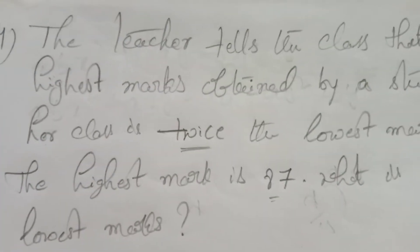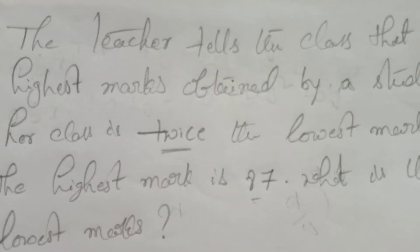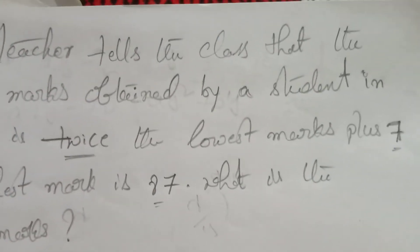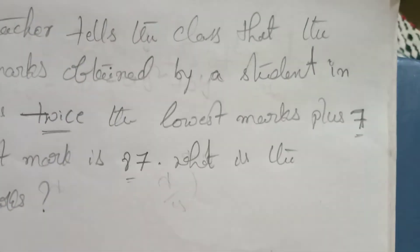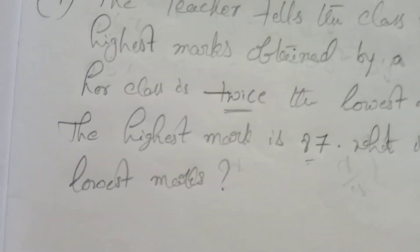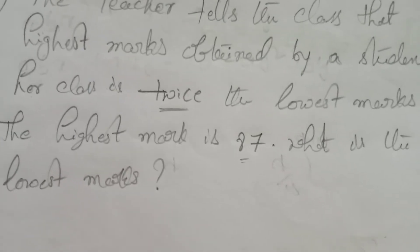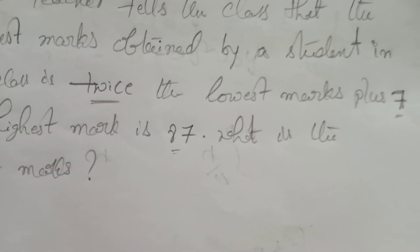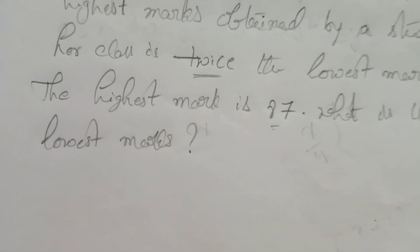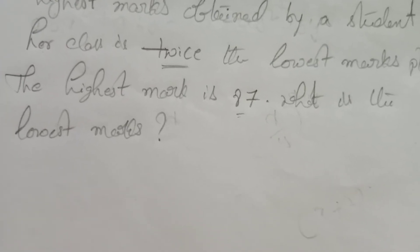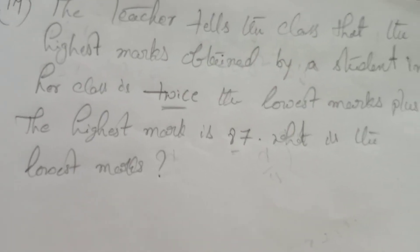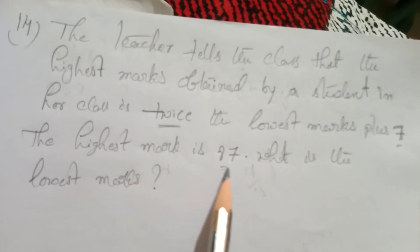Problem 14. The teacher tells the class that the highest marks obtained by a student in her class is twice the lowest marks plus 7. The highest mark is 87. What is the lowest marks?